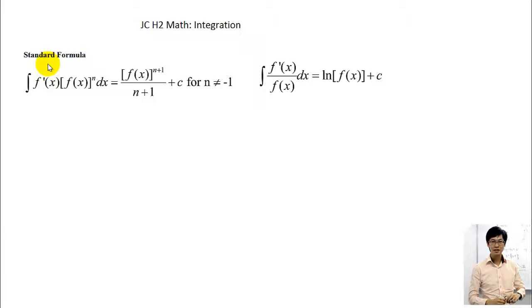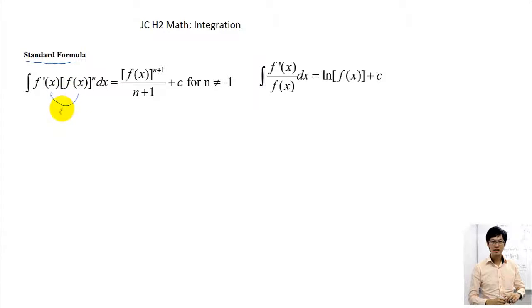So without further ado, let's go through the first formula which you need to learn, which is called the standard formula, because this is the most common formula that you'll be using. For the first one, where you integrate f'(x) times f(x) to the power of n — in other words, where you differentiate inside the bracket, the f(x) — when outside is the derivative of inside, what you do basically is power plus 1, that's n plus 1, and then you divide by the final power, n plus 1, then put plus c.